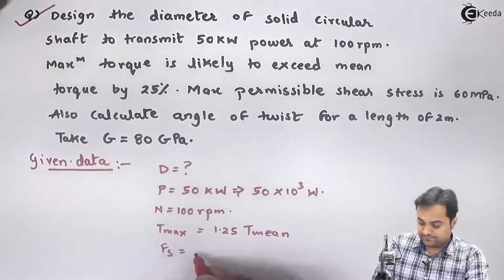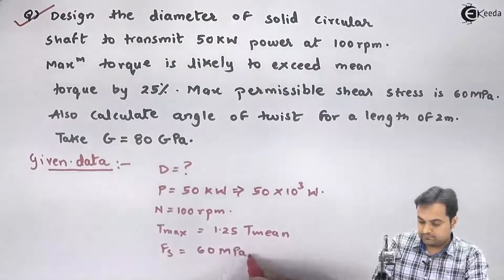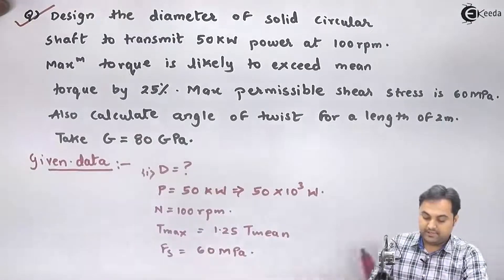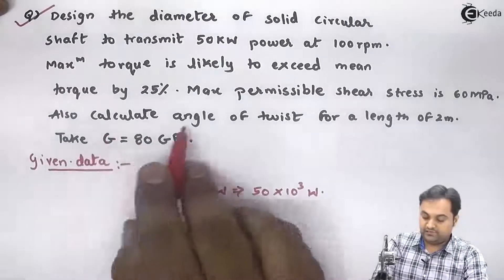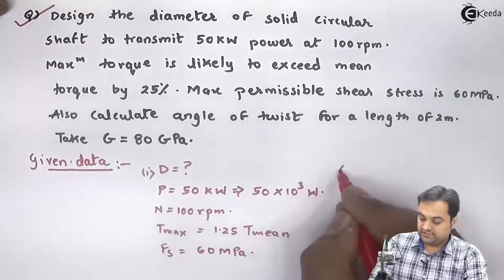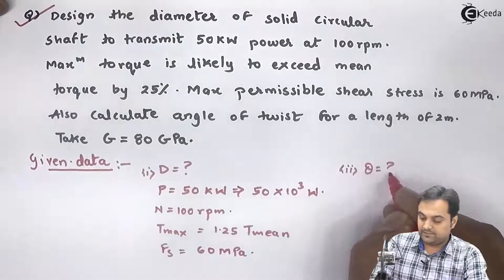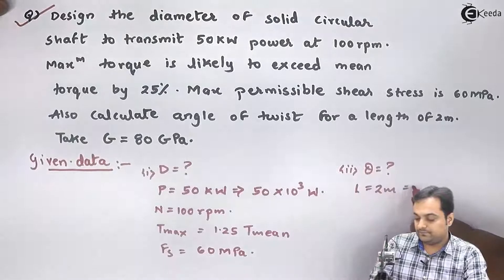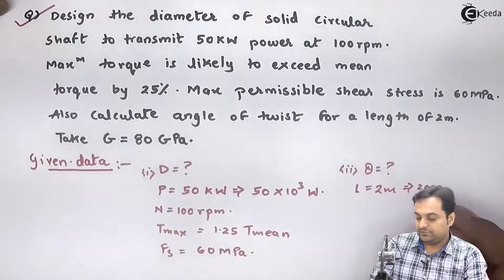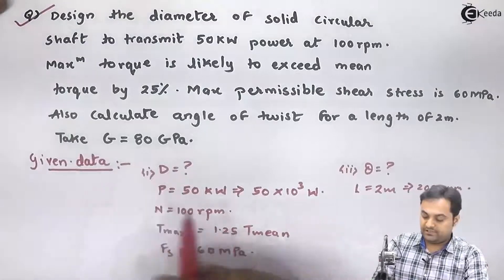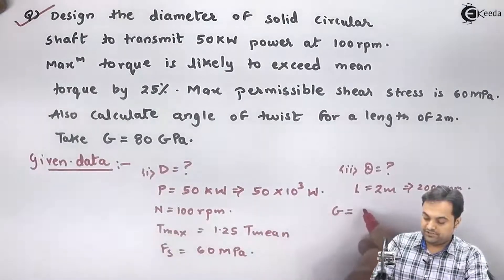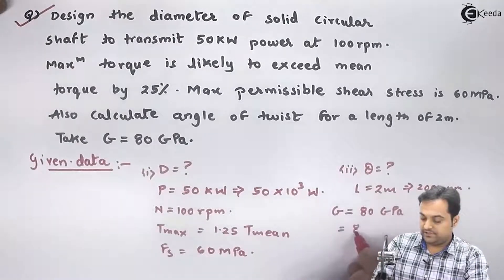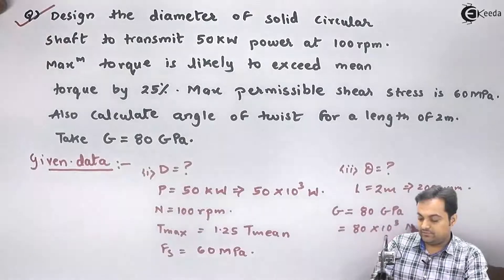The maximum permissible shear stress fs is 60 megapascals. The first part is to calculate the diameter, and the second part is to calculate the angle of twist theta for a length L of 2 meters, which I will convert to millimeters. Modulus of rigidity G is 80 GPa, which becomes 80 into 10 raised to 3 newtons per millimeter squared.